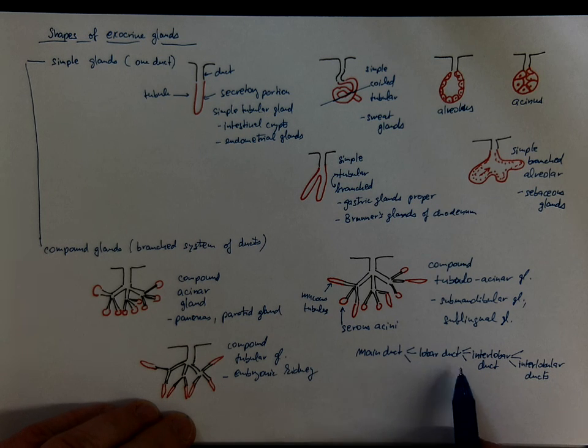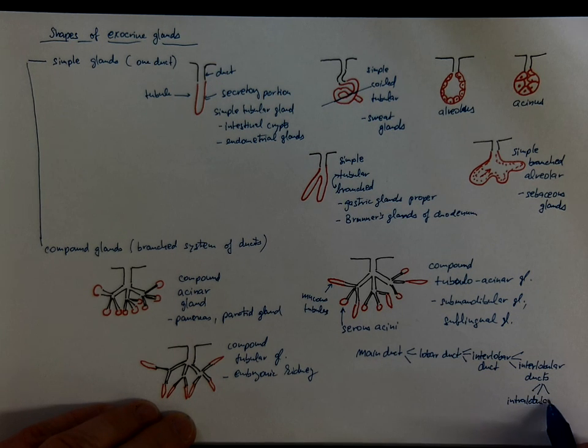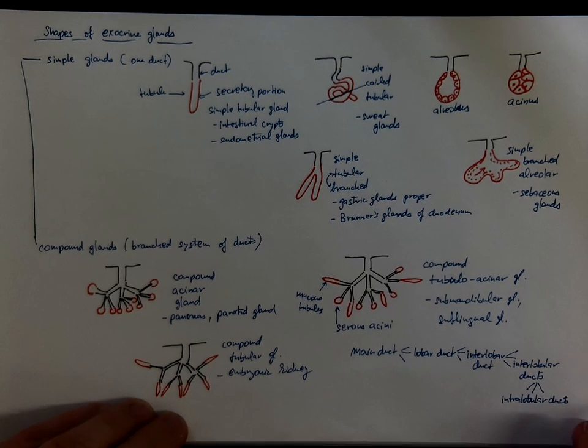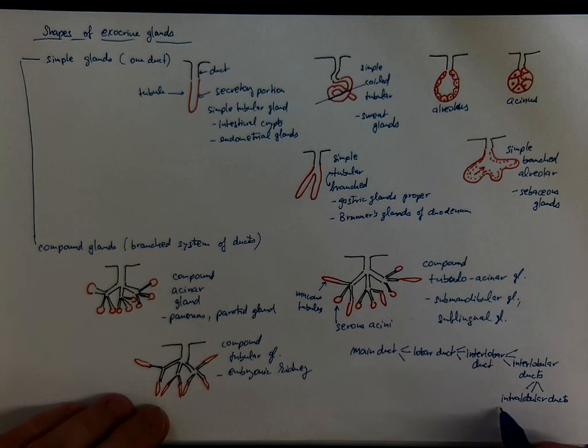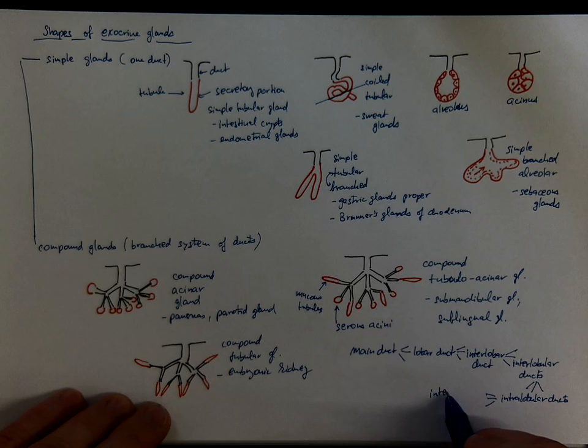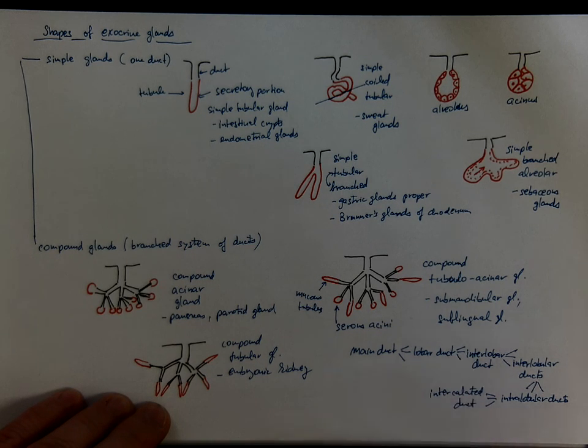They are called interlobular ducts. Because as you go down in the hierarchy and the gland is separated divided into lobes and lobules, that's reflected by the terminology. Interlobular ducts originate from smaller ducts that are already inside the lobules. That's why we call them intralobular ducts. And they originate from the smallest, called intercalated ducts. So there is a whole branching tree of ducts.